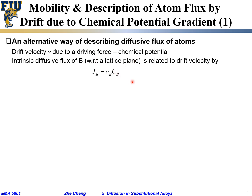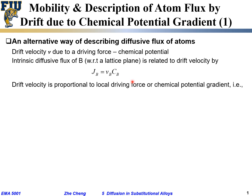We kind of used this same relationship when dealing with the Darken equation. From a driving force point of view — from what you learn in physics — the velocity we're going to write as a so-called mobility, M for mobility, with subscript b for the b atom, times the gradient of chemical potential μ with respect to location.